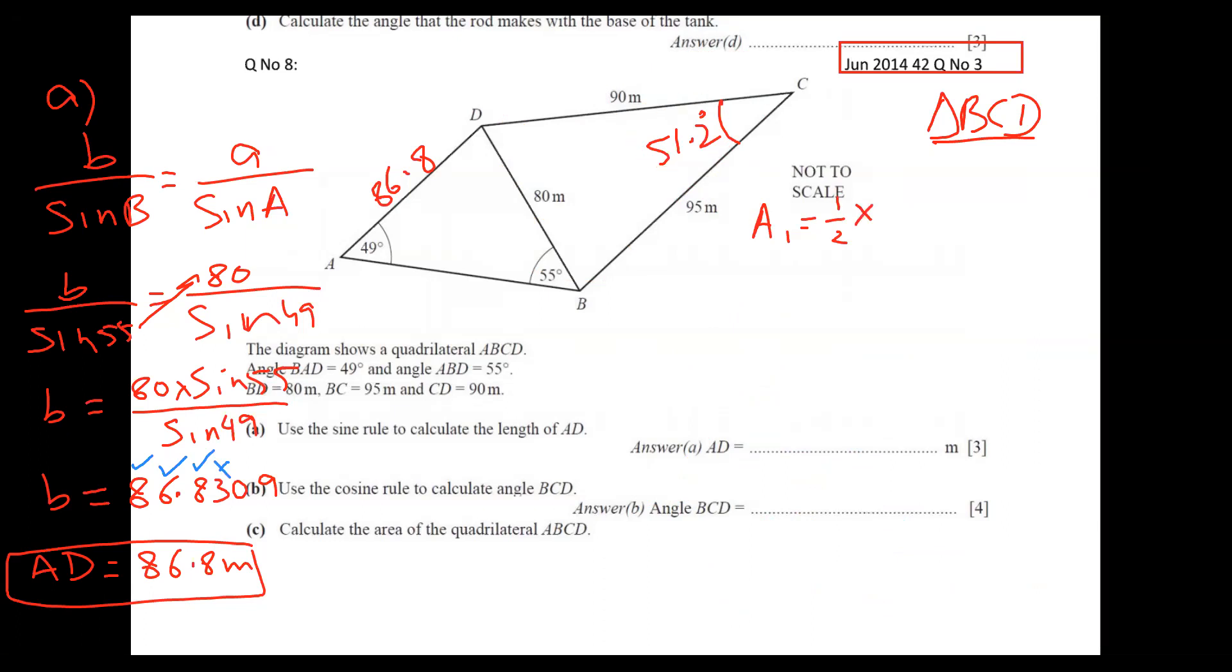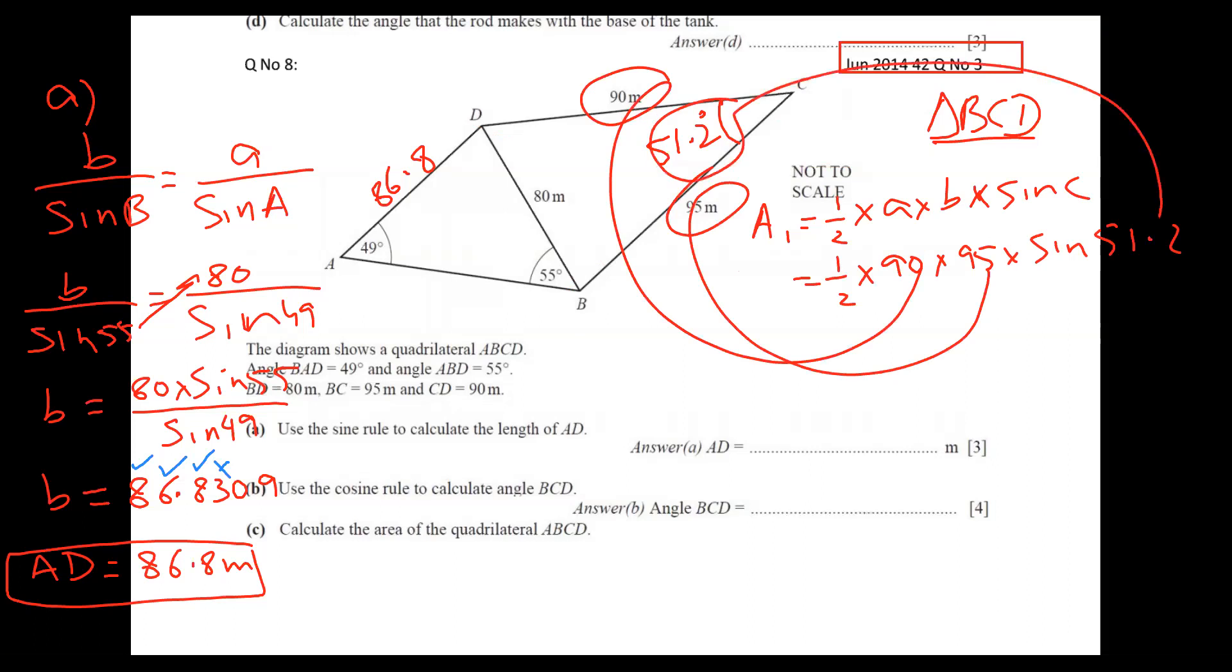So let's start. Half into A into B into sine C. I am not using the letters B and D here. I'm using general formula - this is a general formula for all. Half into one side is 90, second side is 95, and sine of the middle angle, which is 51.2. Repeat: one side here, second side here, and middle angle here. I hope the idea is very, very clear.